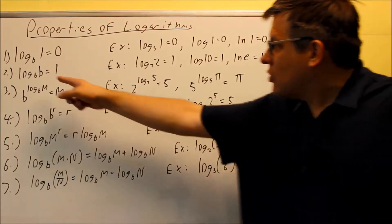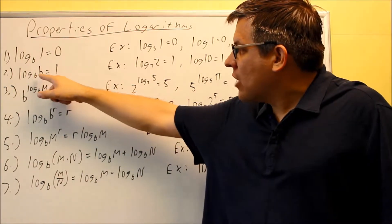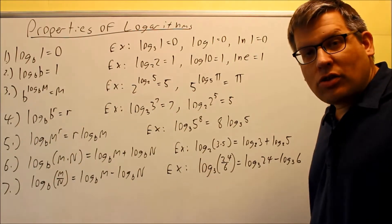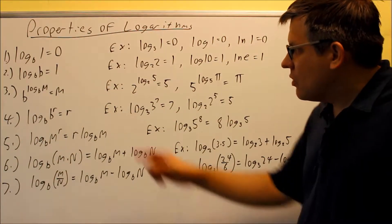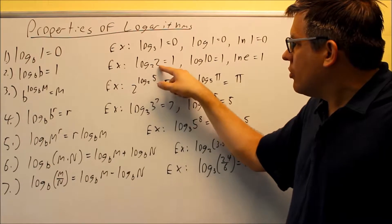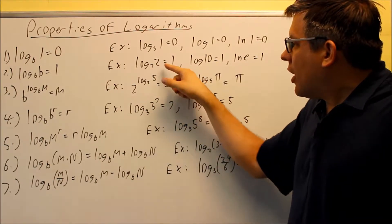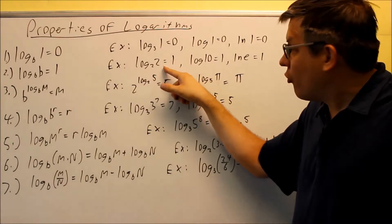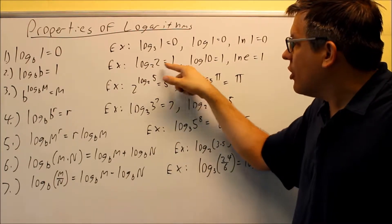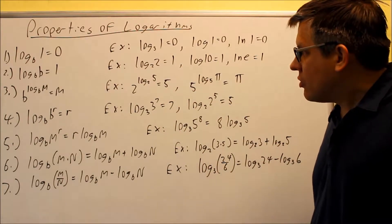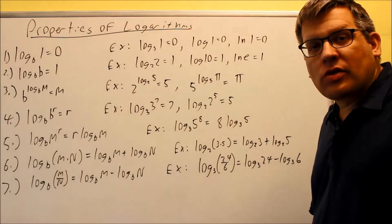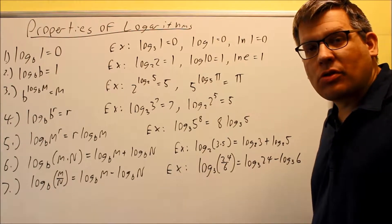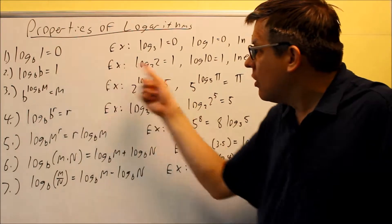The next property: if the base matches the number that comes immediately afterwards, the whole expression equals 1. For instance, log base 2 of 2 equals 1. The reason is if I change it to exponential form, I get 2^1 = 2. Any number raised to the power of 1 gives the same number you started with.